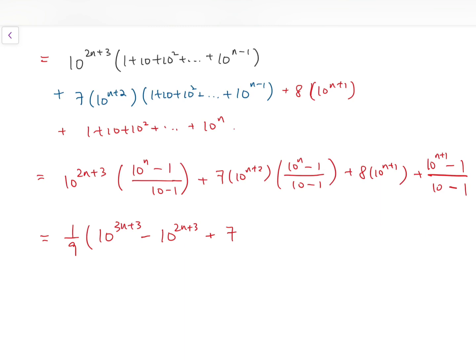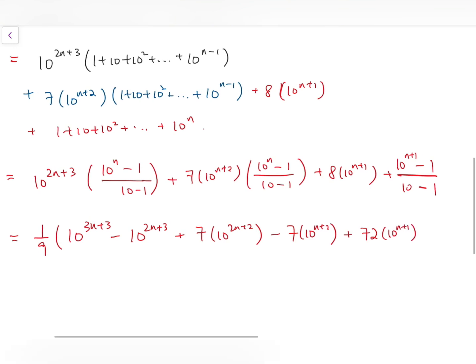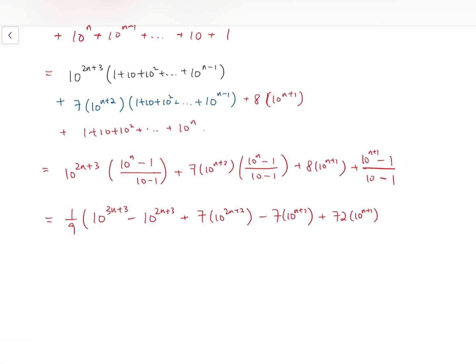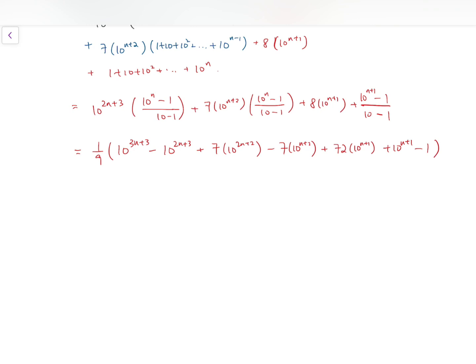Next, then we have 1 over 9 times 10 to the power 3n plus 3 minus 10 to the power 2n plus 3. For 7 times 10 to the power n plus 2 and so on, we have 7 times 10 to the power 2n plus 2 minus 7 times 10 to the power n plus 2. And then for the 8 term, we actually have 72 times 10 to the power n plus 1. And finally, for the last bit, we have 10 to the power n plus 1 minus 1. So then we focus on simplifying things inside the bracket. To reduce fractions, I'm going to multiply this 9 further to the left. So now we're considering 27 times a_n.